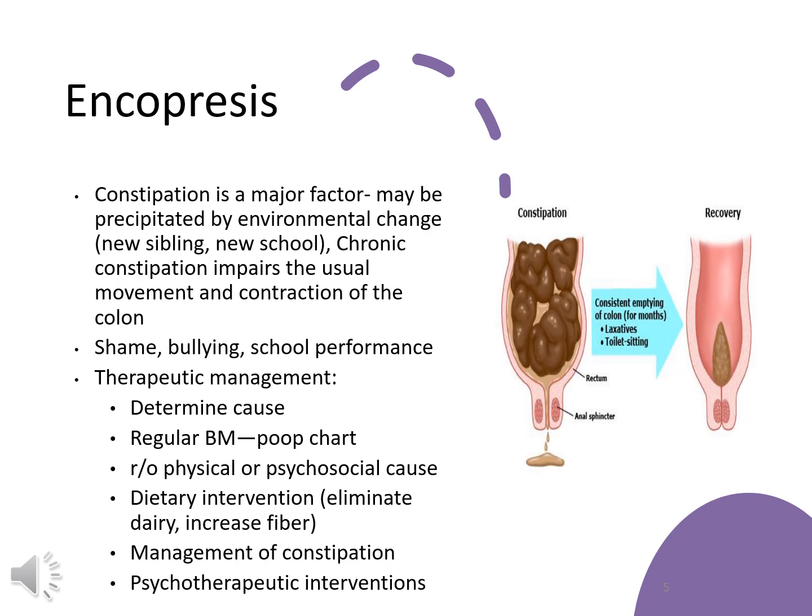Having them sit every day at a certain time with a chart or reward system can help. Dietary changes include eliminating dairy, increasing fiber, increasing water intake, and making sure these kids are moving around. This is typically something that will take a while to resolve, so parents need to understand their part in treatment. If it's related to a psychological crisis or trigger, that needs to be treated as well.